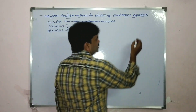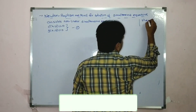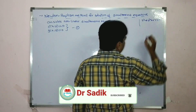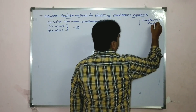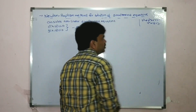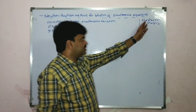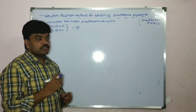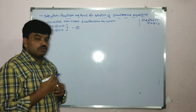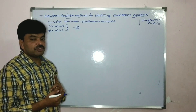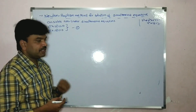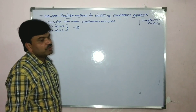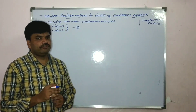For example, we can give here: x squared plus y squared plus xy equal to 1, and x squared plus y equal to 2. Those two are non-linear equations. We are finding solutions — that means finding exactly x value and y value.